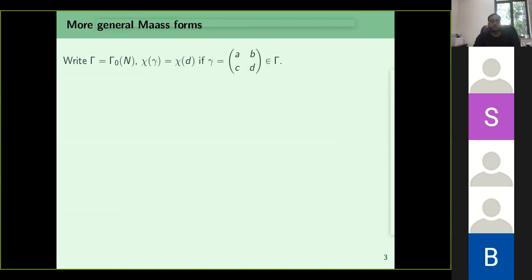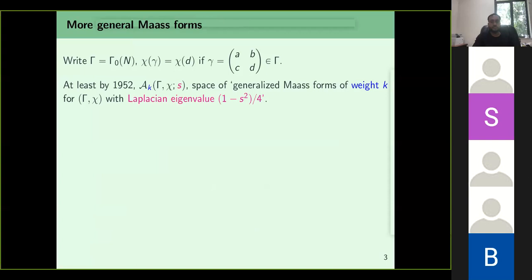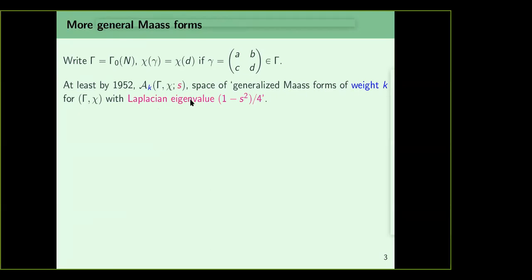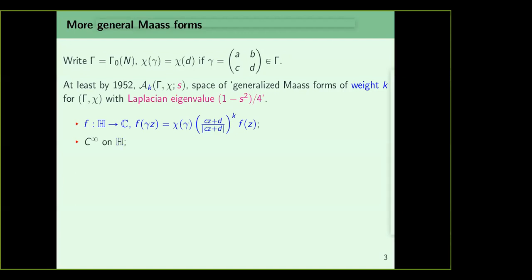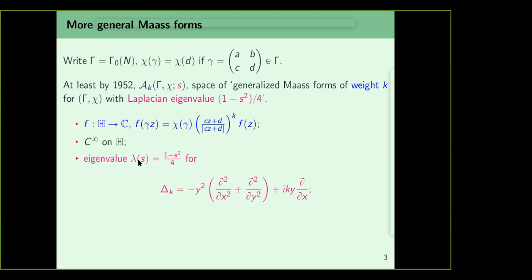There are more general Maass forms, at least defined by Maass as early as 1952. These are certain spaces which we denote A_k(Gamma, chi; s), where k is the weight and s relates to the Laplacian eigenvalue. These are functions from the upper half plane to C with some transformation property, they must be C-infinity, and for a slight modification of the hyperbolic Laplacian depending on weight k, they are required to have eigenvalue (1 - s²)/4. Some partial justification for that parametrization will be provided in lecture 2.